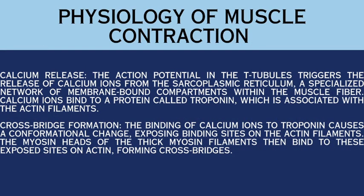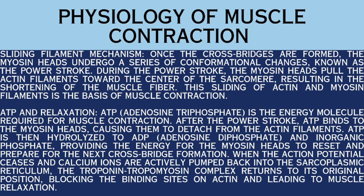Third, calcium release — the action potential in the T-tubules triggers the release of calcium ions from the sarcoplasmic reticulum, a specialized network of membrane-bound compartments within the muscle fiber. Calcium ions bind to a protein called troponin, which is associated with the actin filaments. Fourth, cross-bridge formation — the binding of calcium ions to troponin causes a conformational change, exposing binding sites on the actin filaments. The myosin heads then bind to these exposed sites, forming cross-bridges. Fifth, sliding filament mechanism — once cross-bridges are formed, the myosin heads undergo conformational changes known as the power stroke, pulling the actin filaments toward the center of the sarcomere and shortening the muscle fiber.